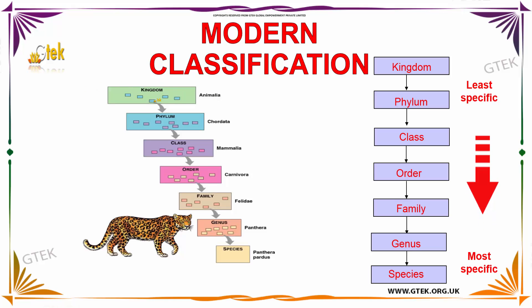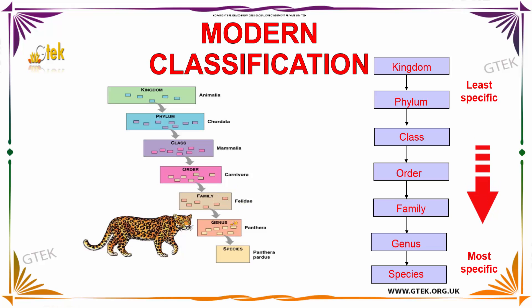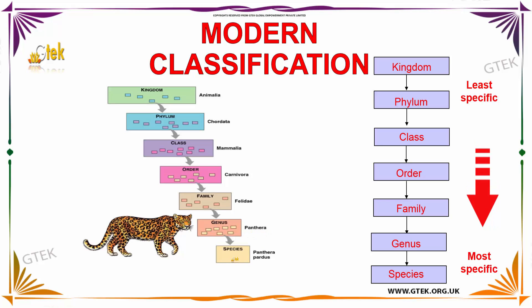For kingdom, animalia; phylum, chordata; class, mammalia; and order for carnivora; family, felidae; and genus for panthera. And the final one, species, is panthera fortis.